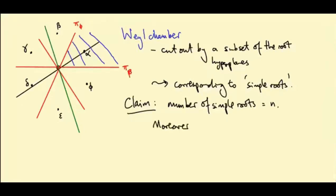Moreover, if beta and phi are simple roots, then beta dot phi is negative.